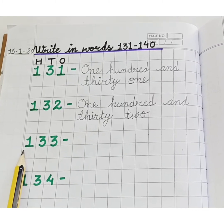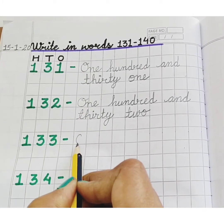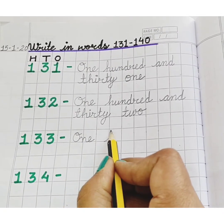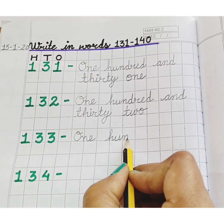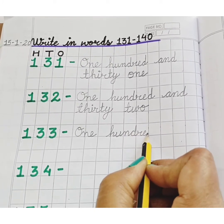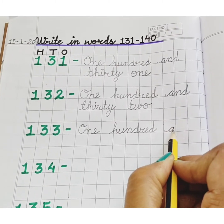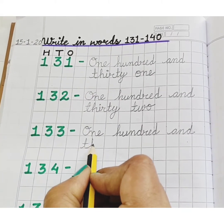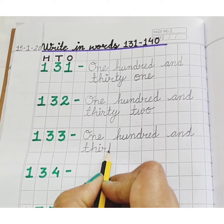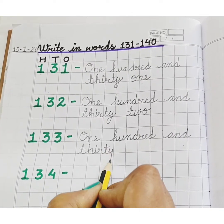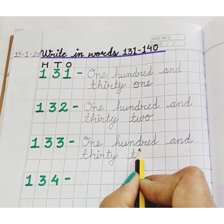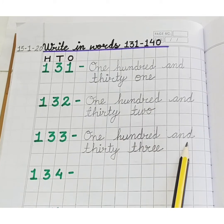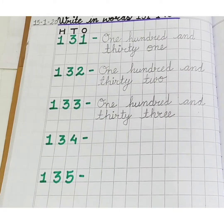Next, 133. O, N, E — 1. H, U, N, D, R, E, D — 100. A, N, D — and T, H, I, R, T, Y — 30. T, H, R, E — 3. 133.